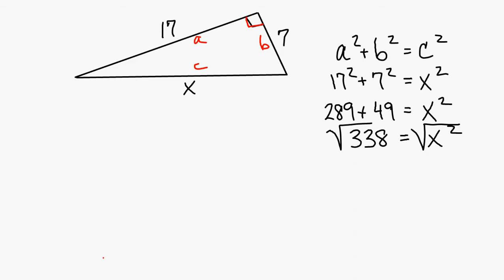Since we found the square root of 338 and it's a non-terminating decimal that we rounded, your squiggly line replaces your equal sign. That squiggly line means approximately — it means that you rounded something.